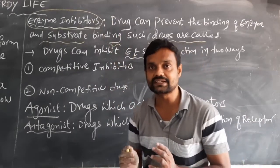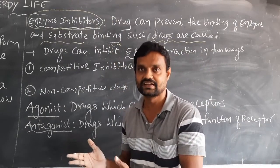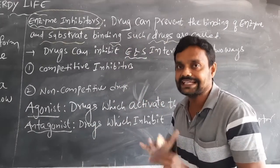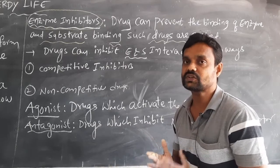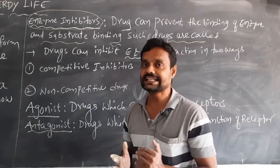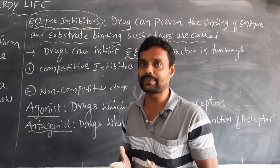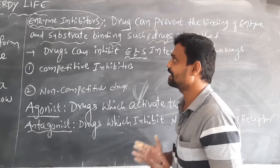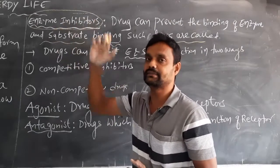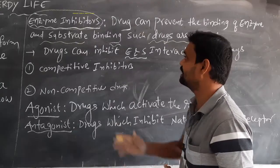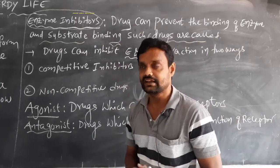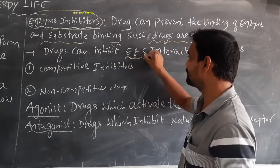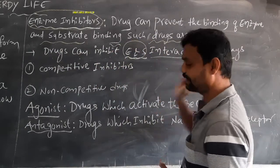Some drugs can prevent the enzyme and substrate binding reaction. That type of drug is called an enzyme inhibitor. A drug can inhibit the enzyme and substrate interaction in two ways.